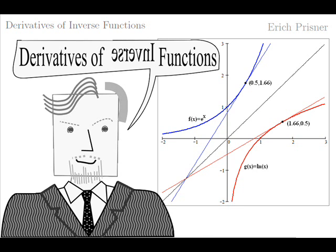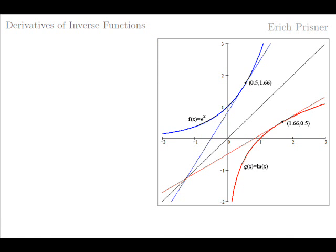To find the derivative of f of x equals cube root of x, all we need is the derivative of the inverse function g of x equals x cubed. All we need to find the derivative of f of x equals e to the power of x is the derivative of the inverse function g of x equals ln of x. Look as an example at the graph of f of x equals e to the power of x displayed in bold blue, and of its inverse function g of x equals ln of x displayed in bold red.